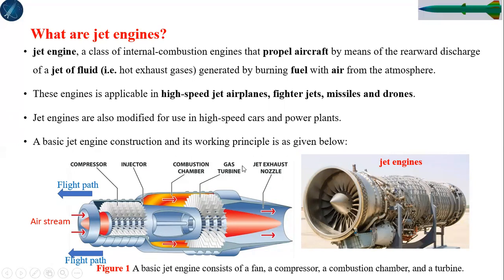Combustion produces very high-pressure, high-temperature gas. This gas accelerates through the exhaust nozzle. In between, there are gas turbines — two- or three-stage turbines — and five-stage compressors. The gas accelerates through a converging-diverging nozzle. When it exits, due to Newton's third law of action and reaction, the vehicle moves forward. This is the principle behind almost all propulsion systems, whether solid, liquid, or other.